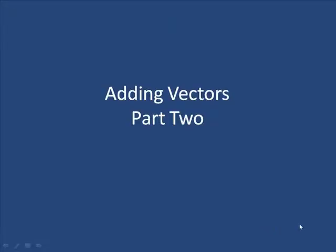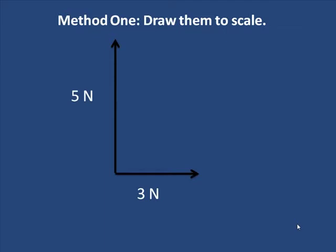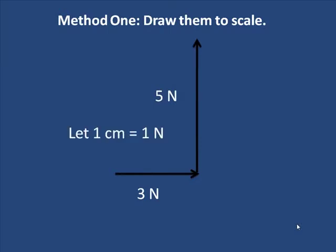Let's continue our look at adding vectors. Let's suppose that I want to have two forces, a 5 newton force and a 3 newton force. One method is actually to draw it to scale and measure it to find the answer. So you could say, let's let 1 centimeter equal 1 newton.